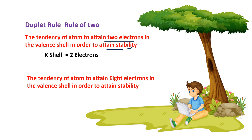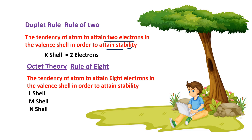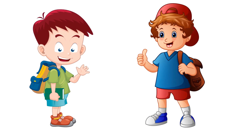This is the rule of eight, or the octet rule. The electron shells are K-shell, L-shell, M-shell, and N-shell, which hold electrons according to the maximum capacity of each shell. The octet rule is a fundamental principle in chemistry that governs how atoms interact and form chemical bonds to achieve stability.